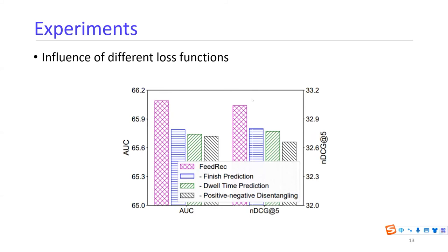We also study the influence of different loss functions. All loss functions contribute to our approach. Since we cannot remove the click prediction loss, we study performance by removing the finish prediction, dwell-time prediction, or the disentangling loss. We find that the disentangling loss has the most important contribution to model performance, showing that distilling high quality positive and negative feedbacks is important for news feed recommendation.